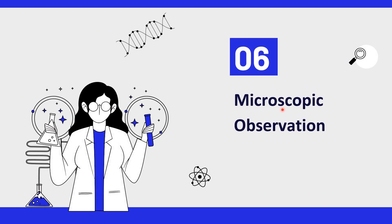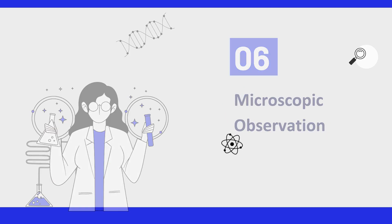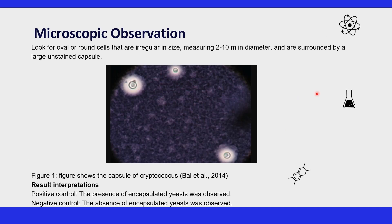When analyzing a sample stained with India ink, particularly when searching for Cryptococcus (a type of yeast), you need to look for oval or round cells that are regular in size, ranging from around 2 to 10 micrometers in diameter. This is how stained Cryptococcus cells with their capsules look under the microscope. For the positive control, the presence of encapsulated yeast confirms the validity of the staining process. In the negative control, the absence of encapsulated yeast ensures the specificity and reliability of the India ink prepared.